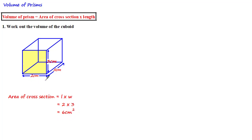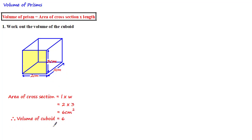The units of length of this cuboid were centimeters, so the area is measured in centimeters squared. Then using the equation we multiply the area of the cross-section by the length, which was five, and therefore the volume of the cuboid is equal to six multiplied by five, which is 30 centimeters cubed.